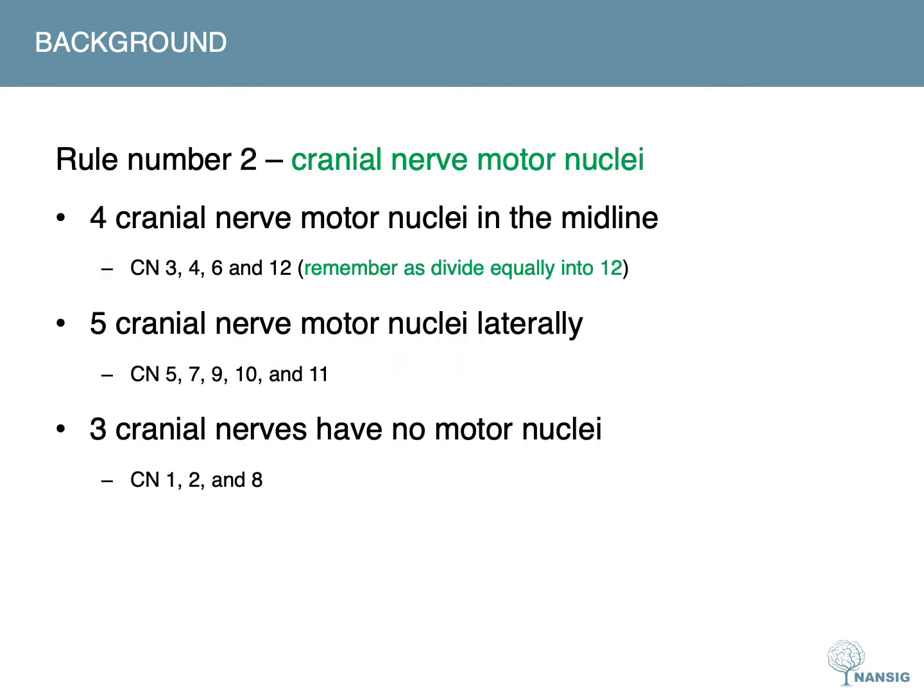From the medulla: cranial nerves nine, ten, eleven, and twelve. Rule number two relates to the cranial nerve motor nuclei. The four cranial nerve motor nuclei in the midline are three, four, six, and twelve — remembered as those that equally divide into twelve. There are five cranial nerve motor nuclei laterally: five, seven, nine, ten, and eleven. Also worth noting that the lateral motor nuclei correspond to innervation of the branchial arches.